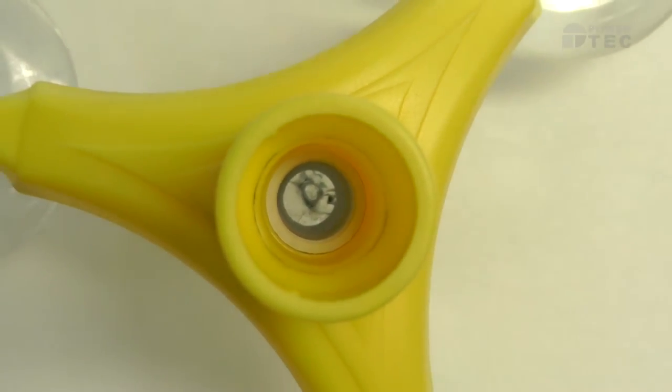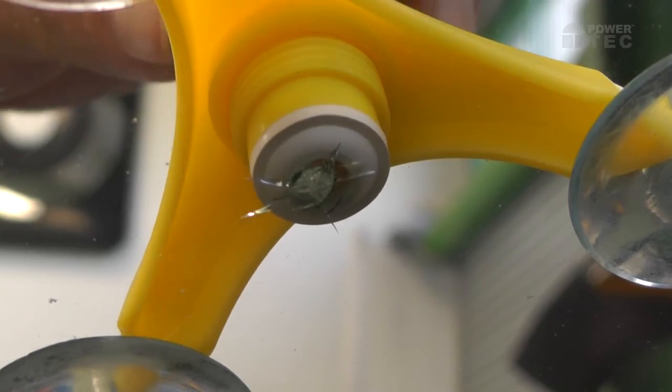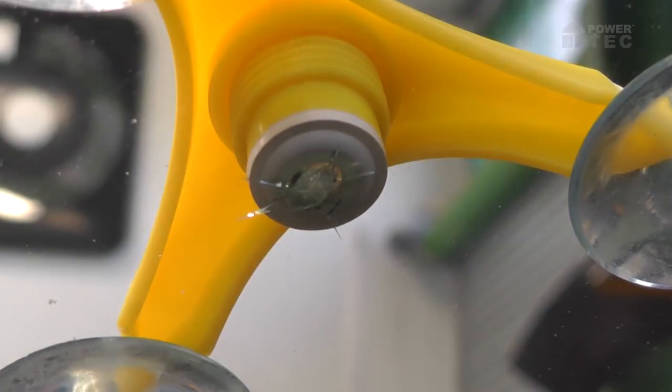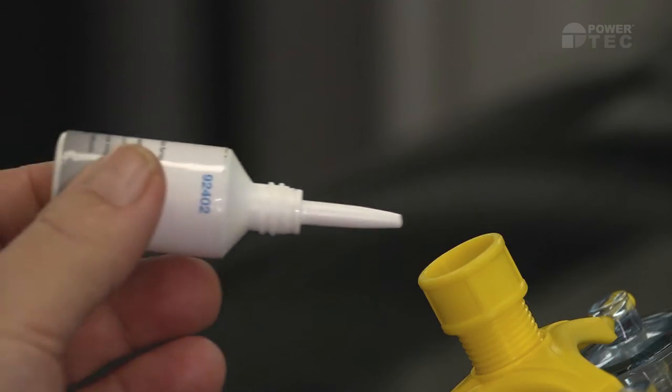The injector barrel can now be screwed down until the white rubber seal compresses against the glass. Now add the resin. Six or eight drops straight into the injector barrel.